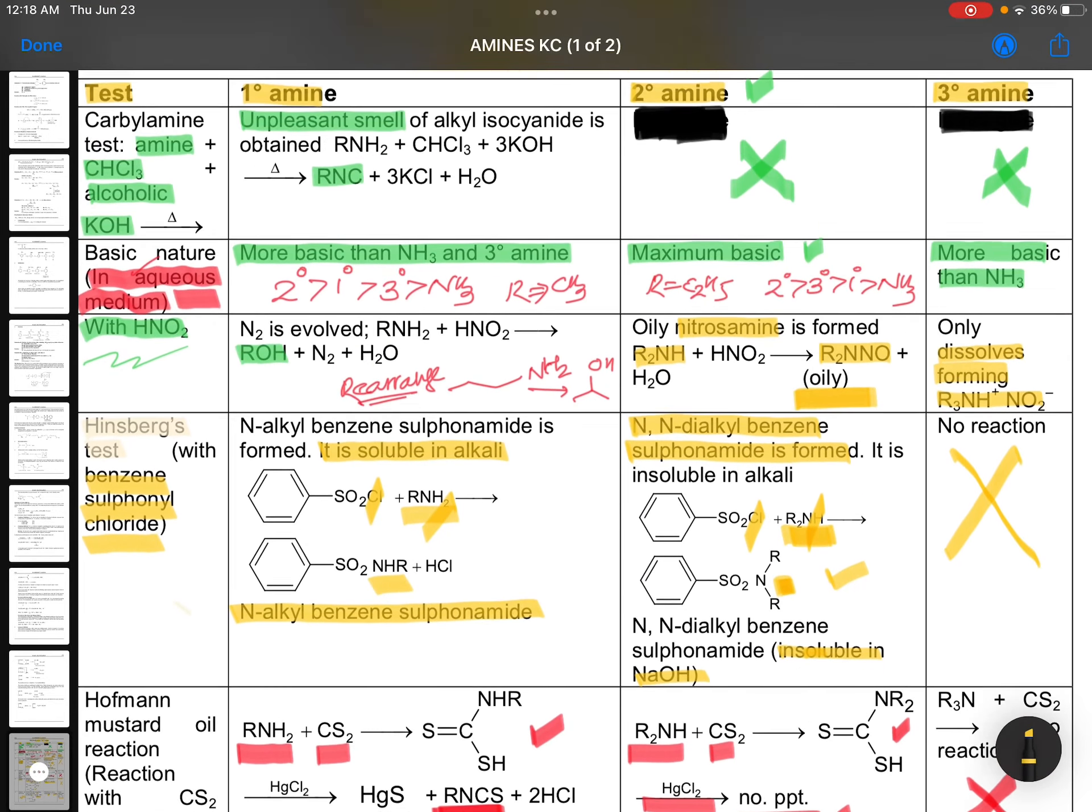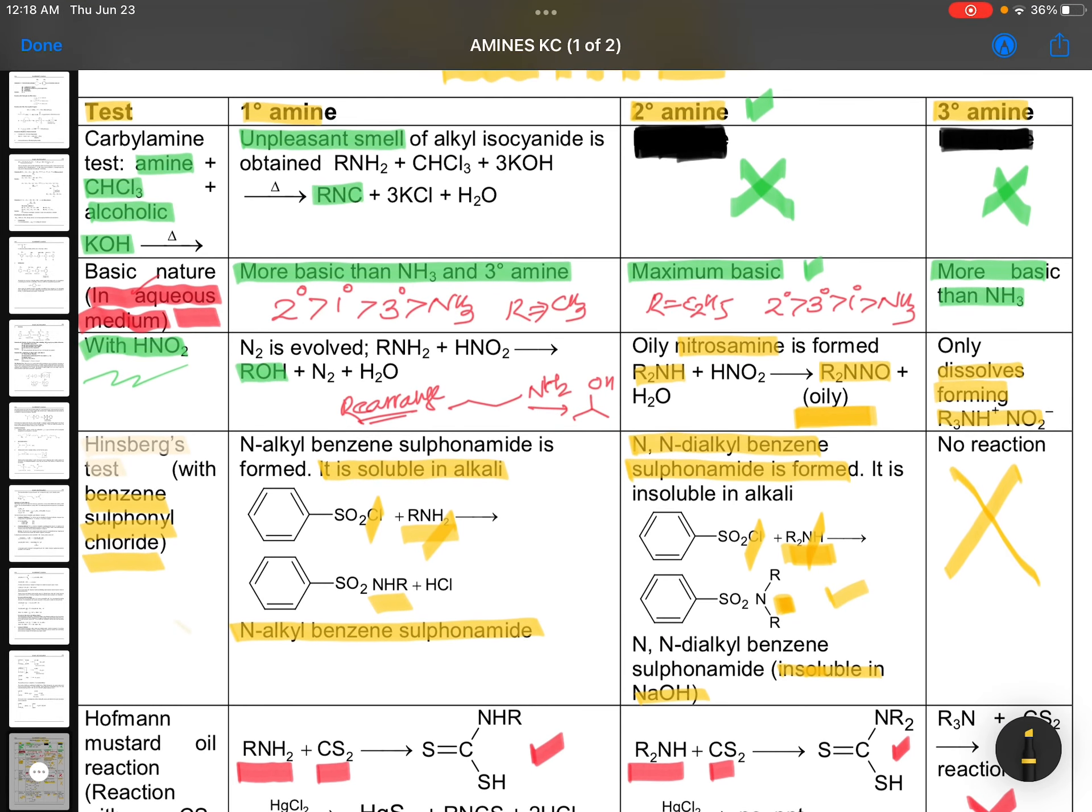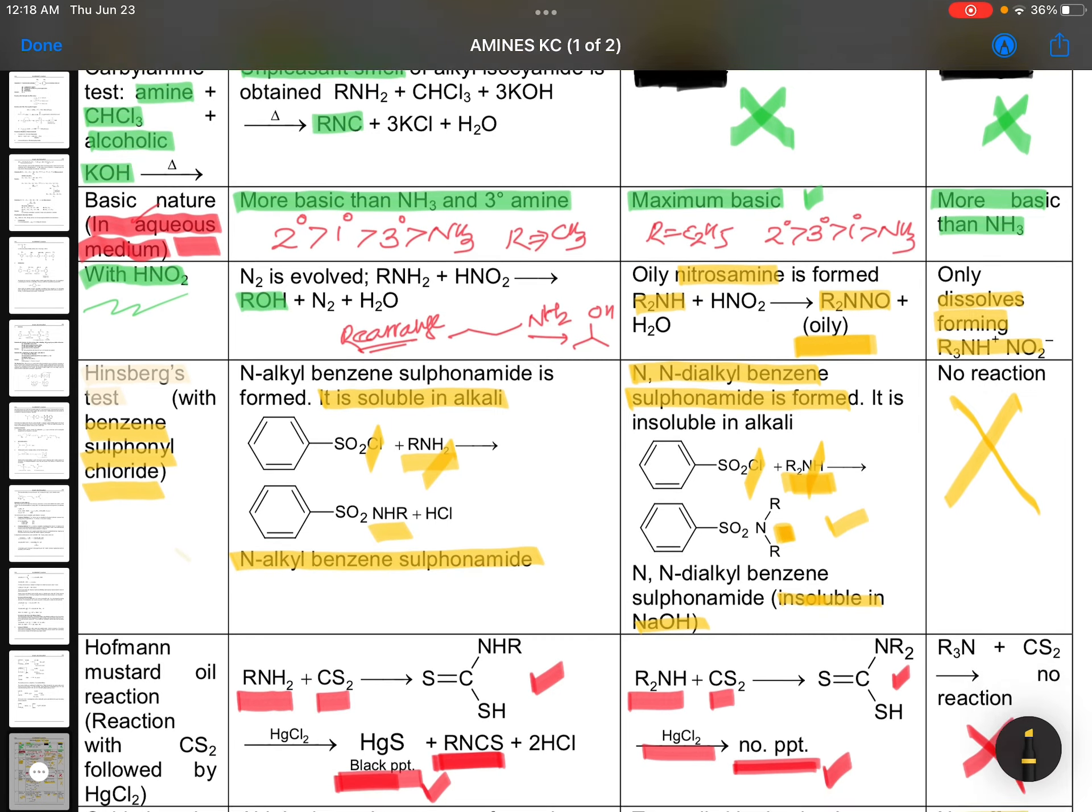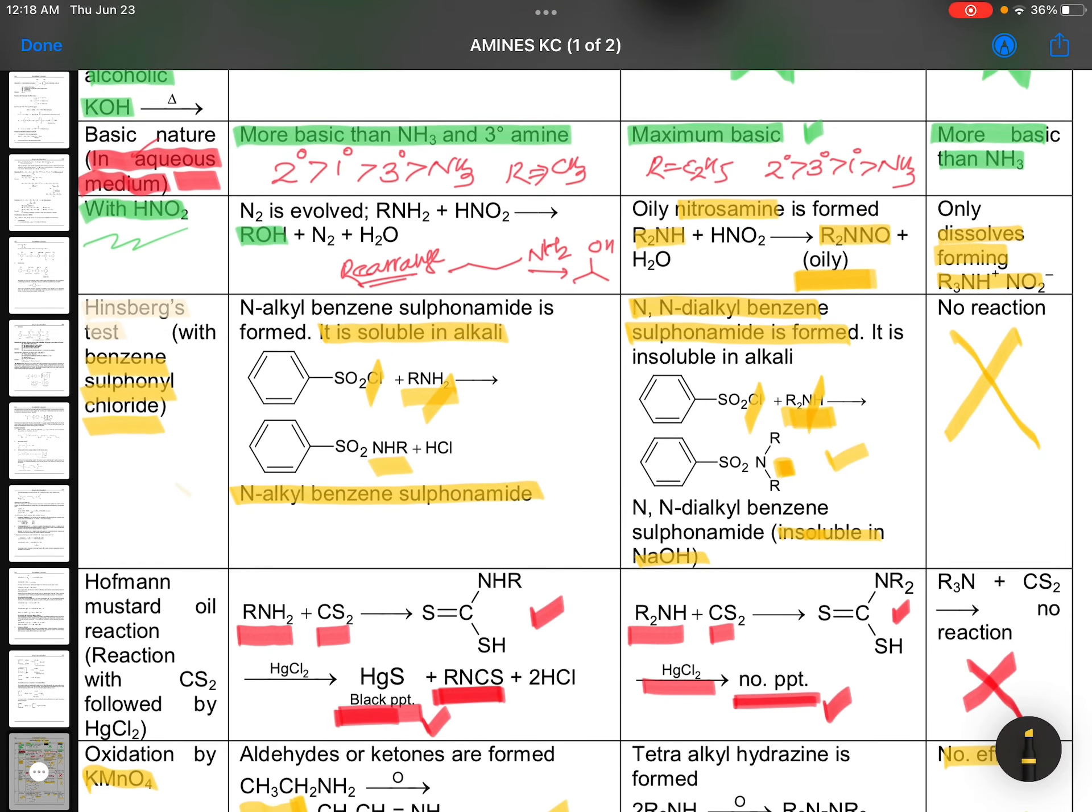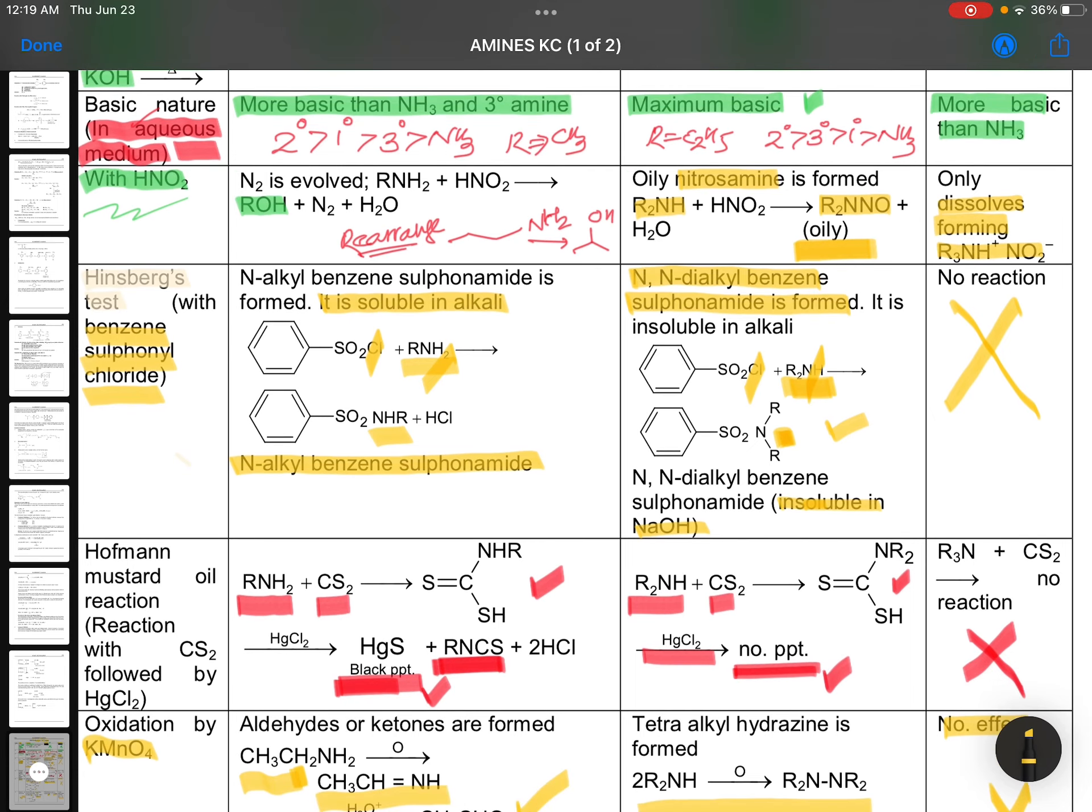So, once we will go with first one. Carbylamine reaction is the most important one given by only primary amine. Offensive odor. Basic nature. Secondary, primary, tertiary, ammonia. For R group, R is methyl group. If R is ethyl or higher, secondary, tertiary, primary and ammonia. With HNO2, primary will be giving you alcohols. Secondary will be giving you oily compound. Tertiary just dissolves.